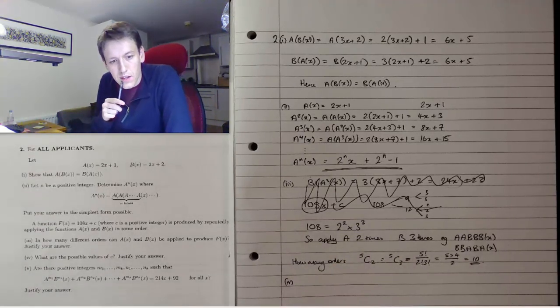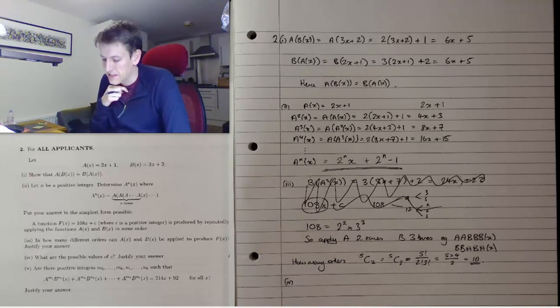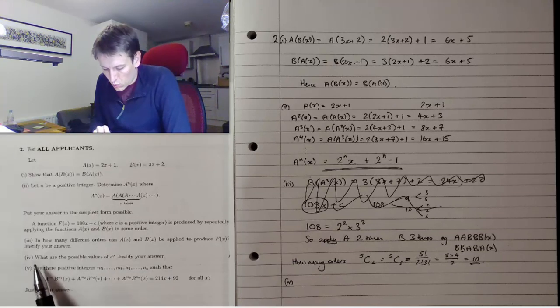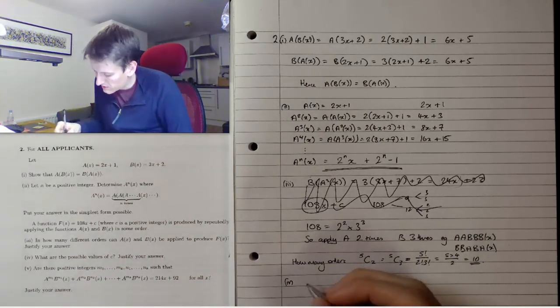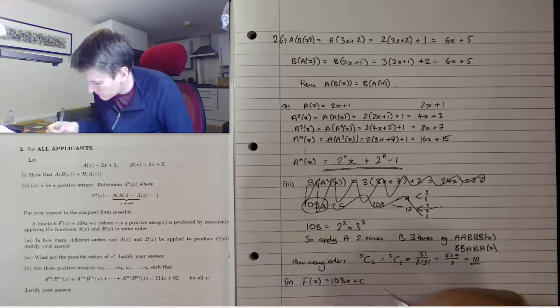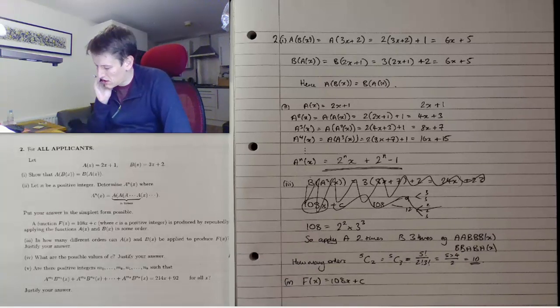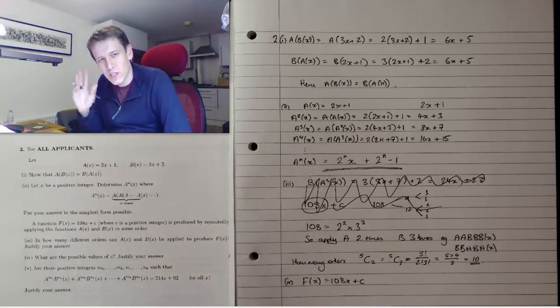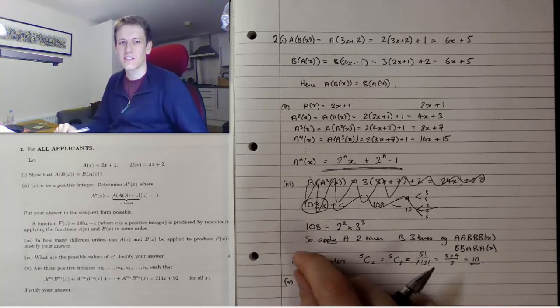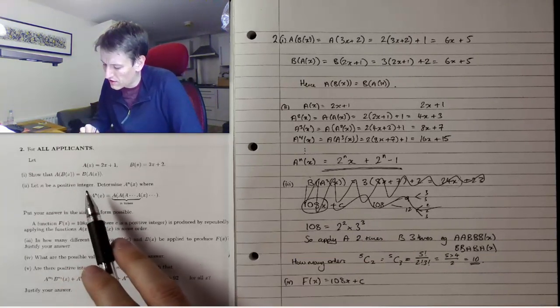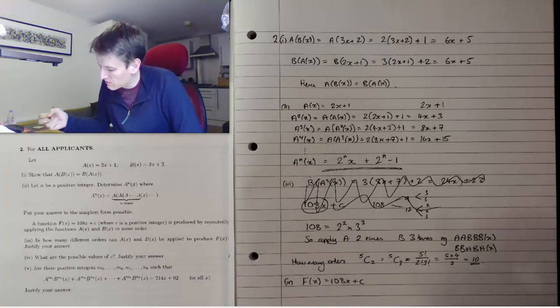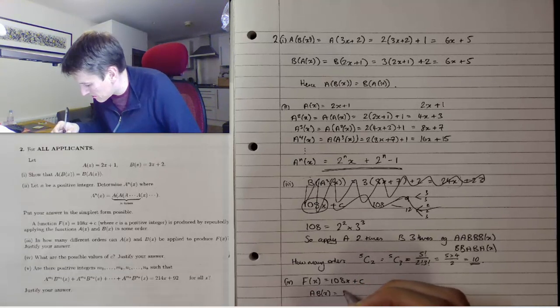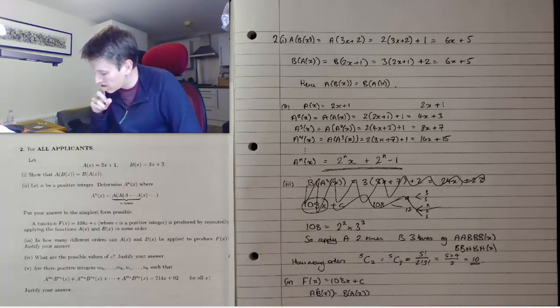Part 4: What are the possible values of c? We've got this thing f(x) = 108x+c, and obviously I could have applied these a's and b's in different orders and maybe get a different answer. But we think back to part 1 - when you're asked an easy result, you should keep it in mind in case it's useful later. We showed earlier that a(b(x)) = b(a(x)).